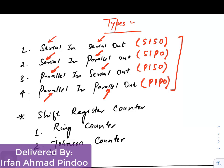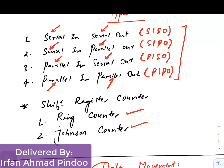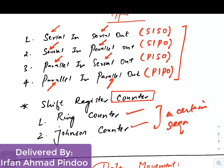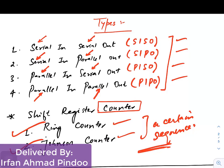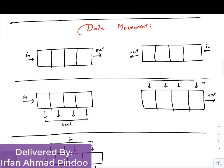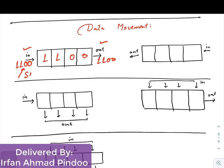In PISO, input is parallel and output is serial. In PIPO, both input and output are parallel. There are also two more special register types that actually create a type of counter because they follow a certain sequence, which we will see in coming lectures. Looking at the first diagram, you can see data such as '1 1 0 0' is stored and output in the same serial format — this is the SISO form.